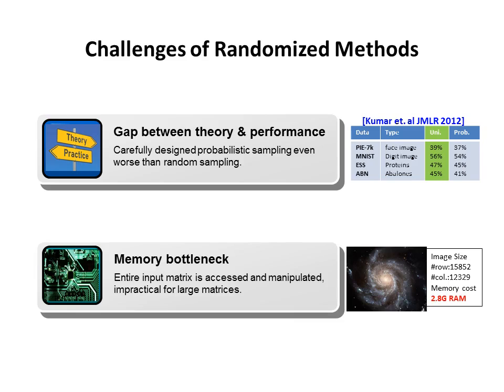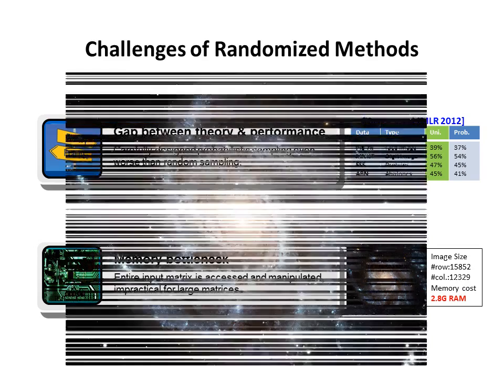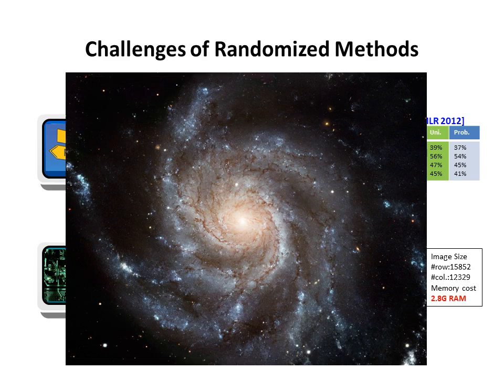Second, most of the existing algorithms require the manipulation of the entire input matrix, which can be computationally very expensive. Here is an example of the image taken by the Hubble telescope, which is composed of 15,000 rows and 12,000 columns. Note that storing this matrix alone already takes 3GB of memory.